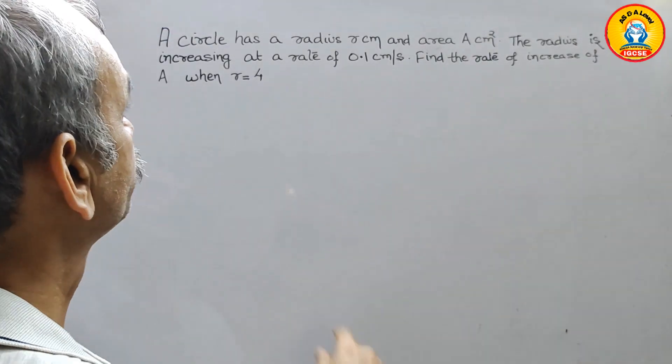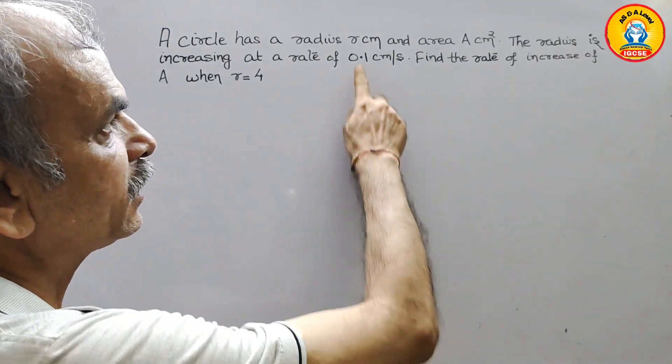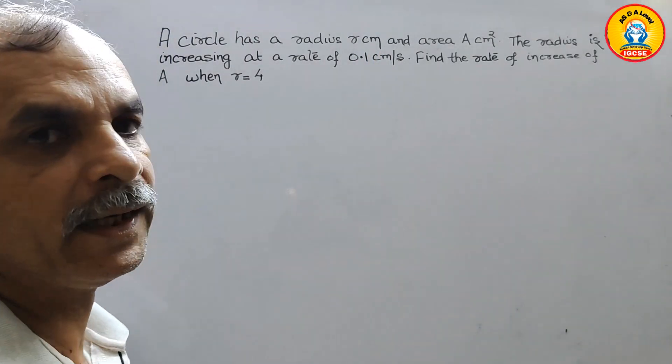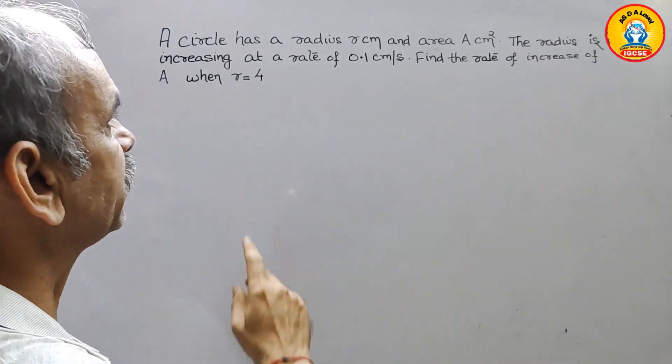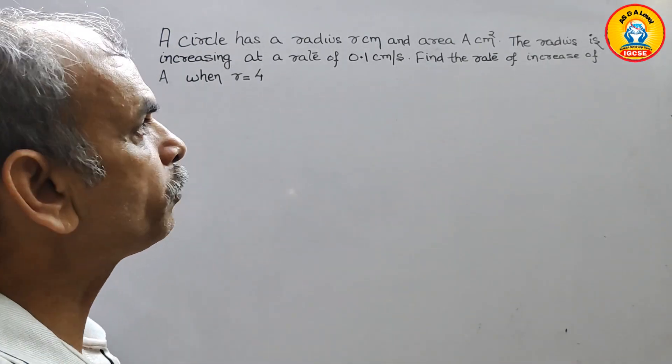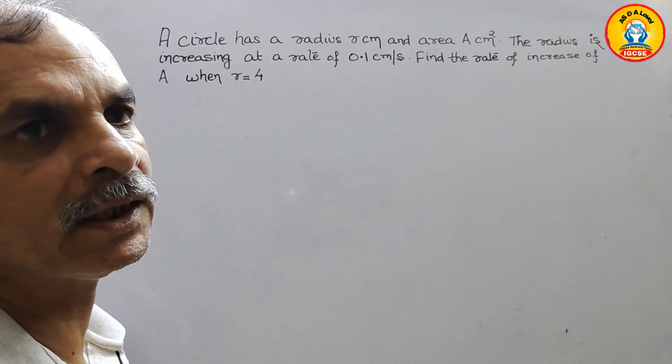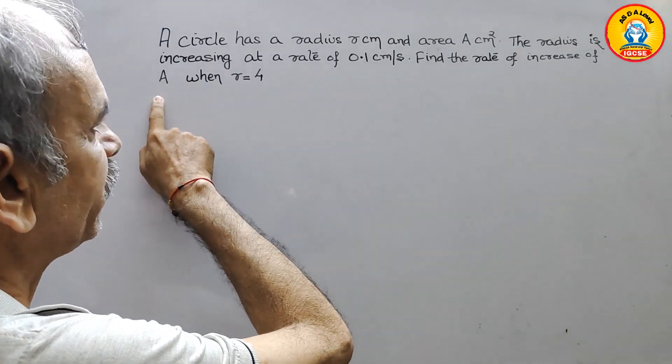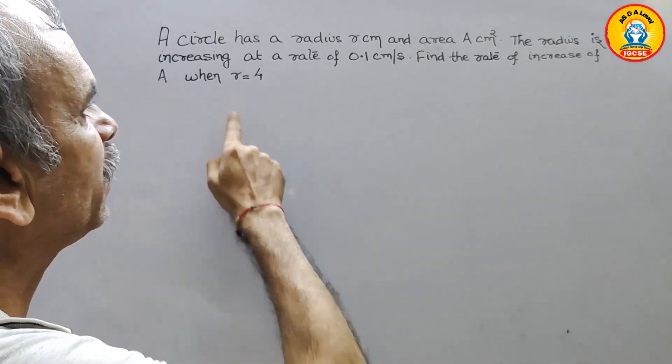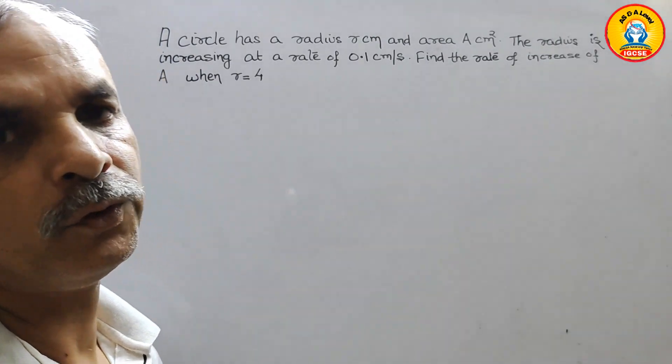Your question is: A circle has a radius r centimeter and area A centimeter square. The radius is increasing at the rate of 0.1 centimeters per second. Find the rate of increase of area A when r is equal to 4.